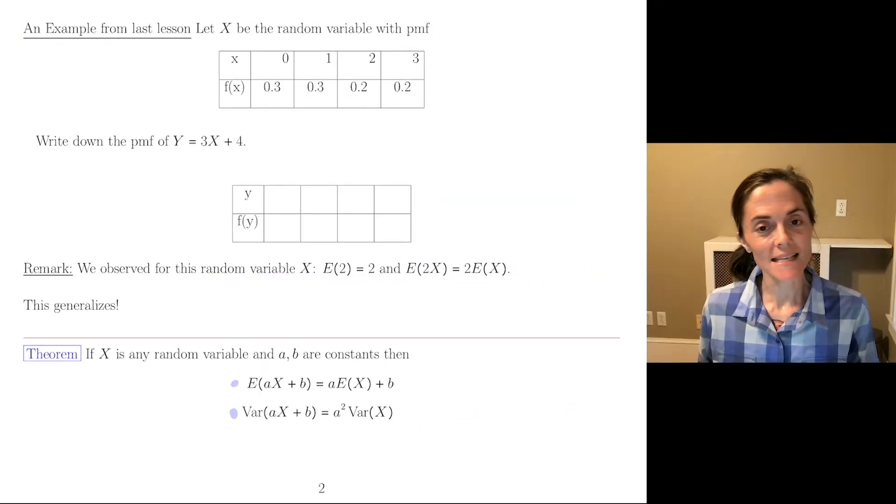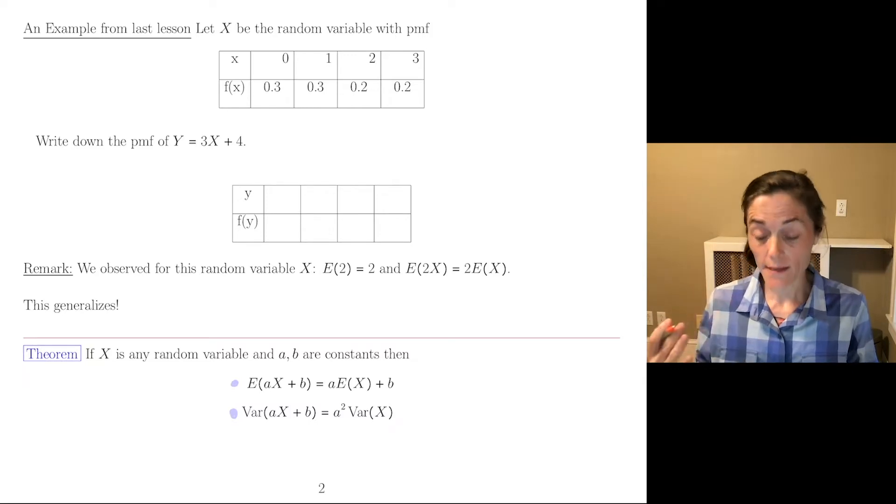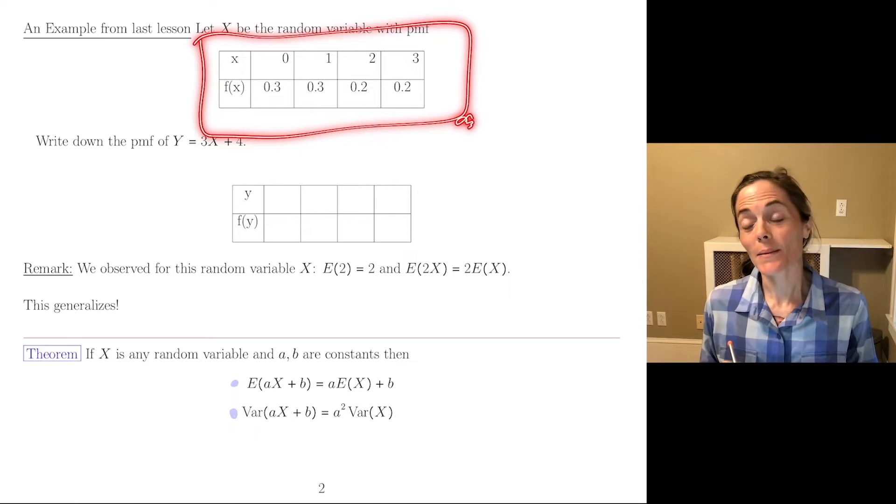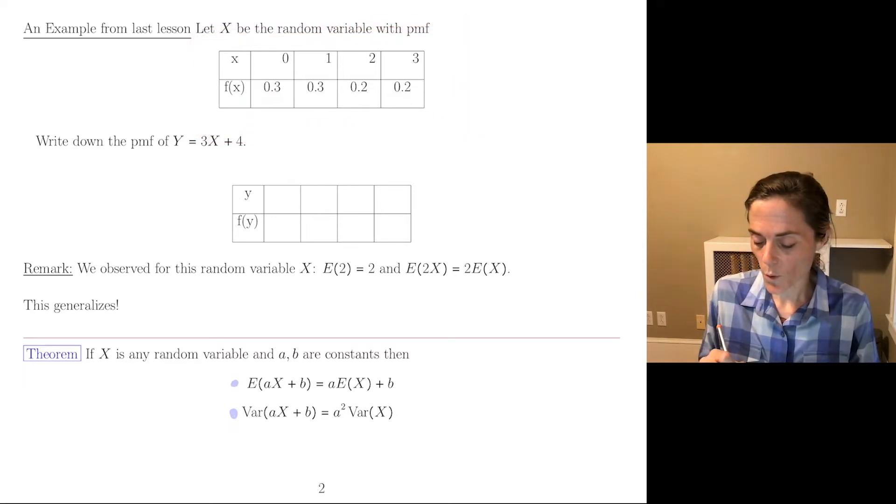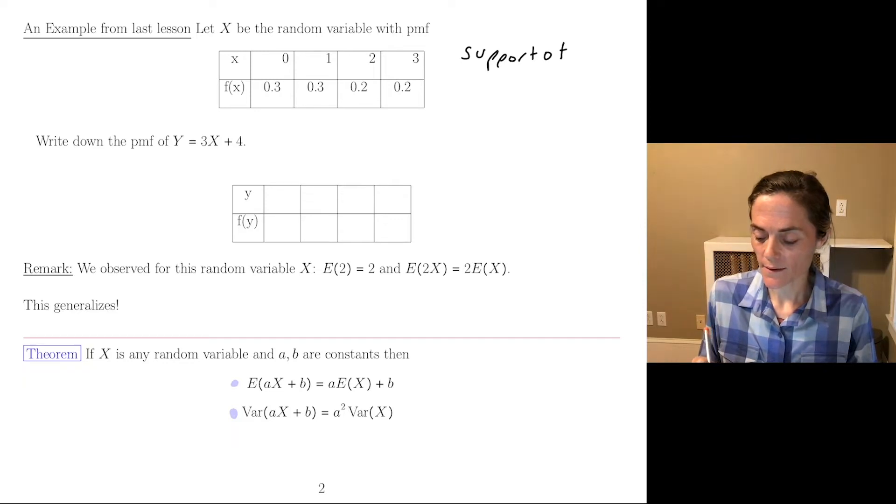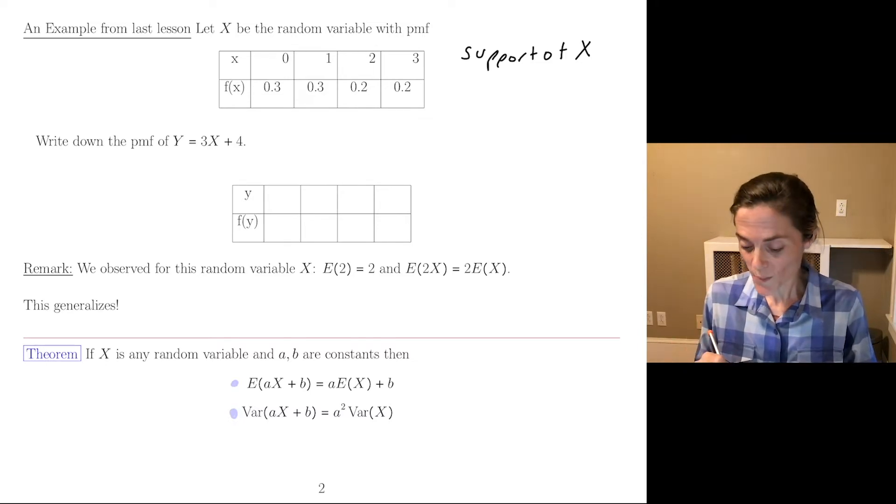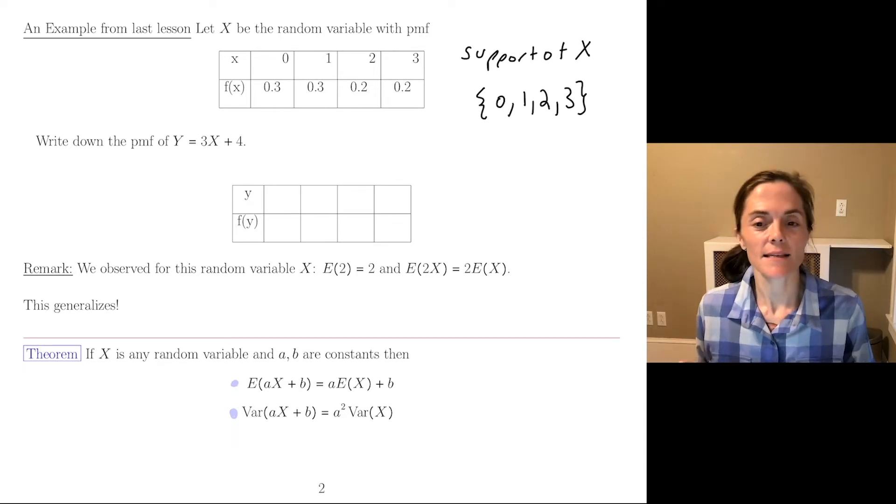Here's an example from the last lesson. We had this probability mass function. It came from assigning a score to each DNA nucleotide. But in any case, here is a probability mass function for random variable capital X. Now, first of all, let's write down the support. Even though we see it, it's going to help us work with this capital Y. So the support of X is 0, 1, 2, and 3.